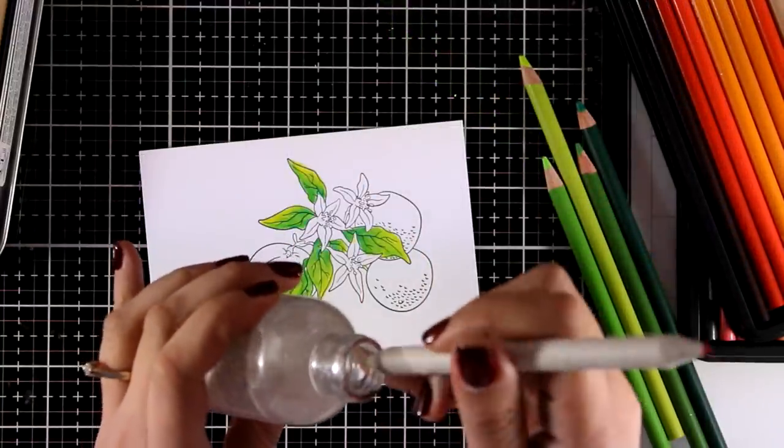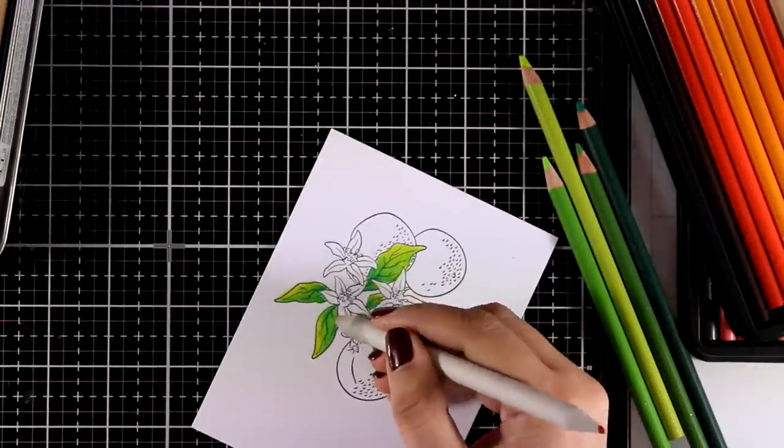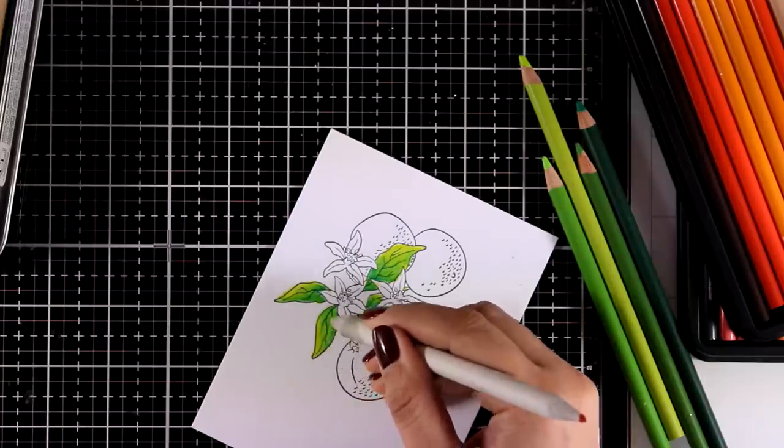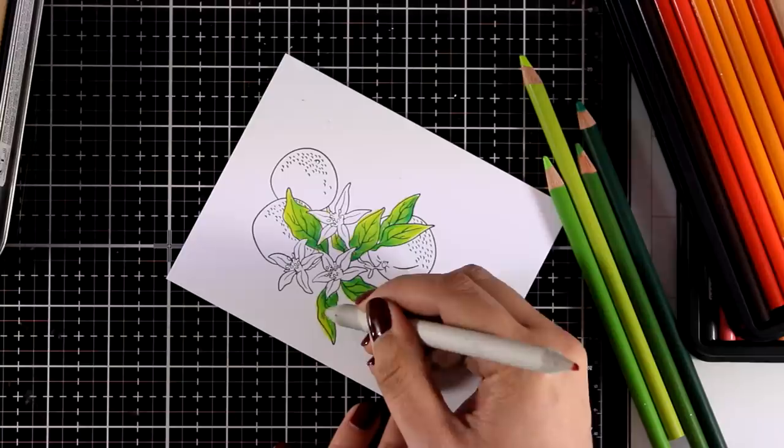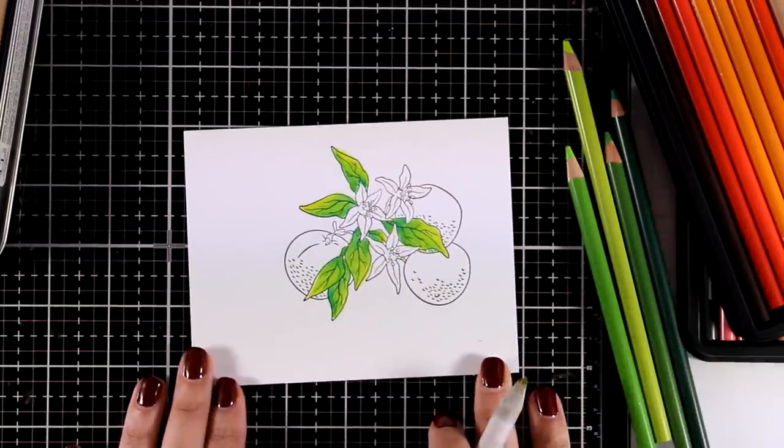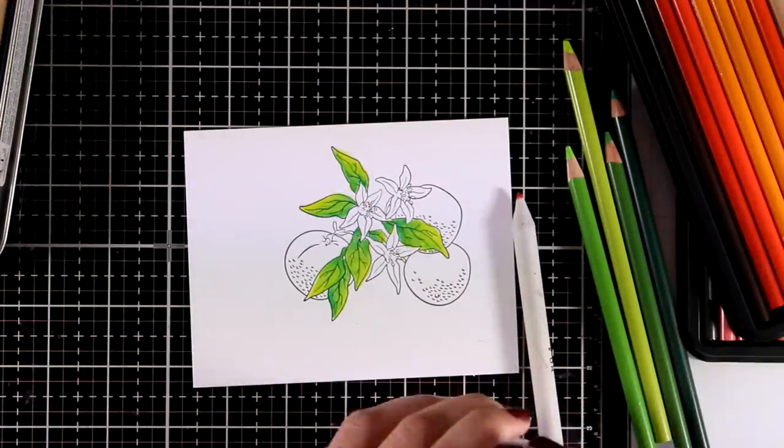You can leave your colored areas as they are, or you can go over them with some gamsol. This is odorless mineral spirits and I'm using a paper stump there to blend the colors just a little bit.